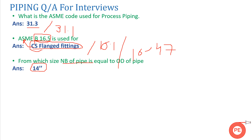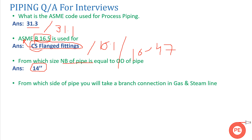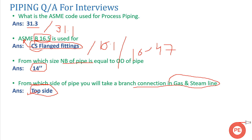From which side of the pipe do you take a branch connection in gas and steam lines? This is an important basic interview question. For gas and steam lines, the branch connection is taken from the top side. If someone asks about water lines, the branch connection is taken from the bottom side.